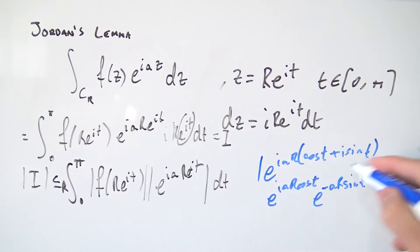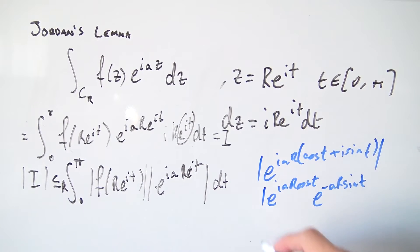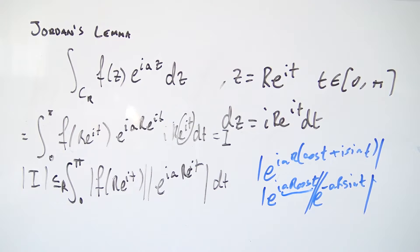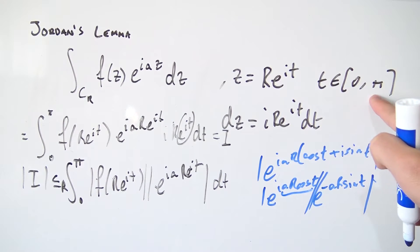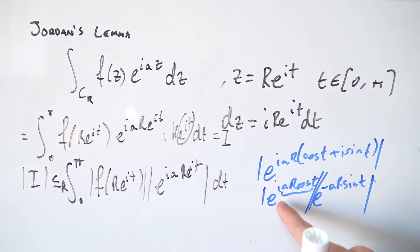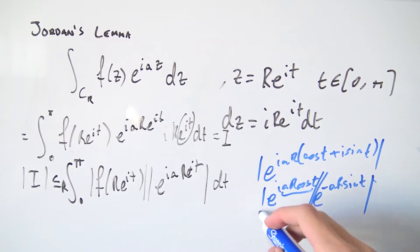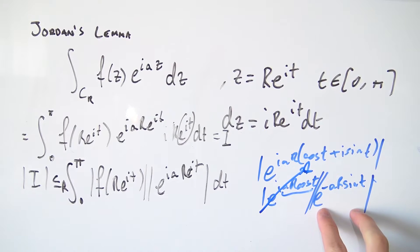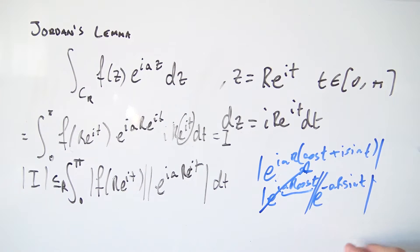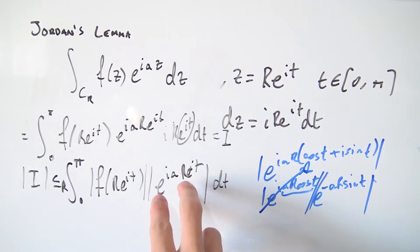We have a product so we can split the absolute values. For e^(iar cos t): since t is a real parameter, ar·cos(t) is a real number, so e^(i times a real number) has absolute value exactly 1 — we don't need to worry about that. All we really have left is e^(−ar sin t), and exponentials are always positive, so we can ignore the absolute value on that term.